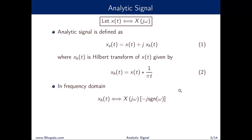By substituting this and after simple algebra, we can see that the Fourier transform of the analytic signal is 2·X(jω)·u(ω). This tells us that the Fourier transform of x_a(t) contains only the positive frequencies of X(jω).